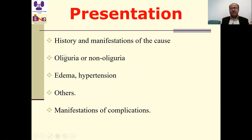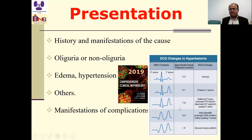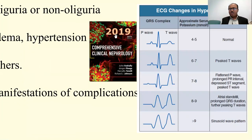How to diagnose: presentations may include history and manifestations of the cause, oliguric or non-oliguric acute renal failure, edema, hypertension, other systemic symptoms, and manifestations of complications. Hyperkalemia is essential to address because in the acute state it may lead to cardiac arrest. ECG changes with hyperkalemia progress: at K 6–7, peaked T waves; at 7–8, P wave flattening and prolonged PR and QRS; at 8–9, further QRS widening and peaked T waves without P waves; at 9+, sinusoidal wave pattern, then the patient may die.